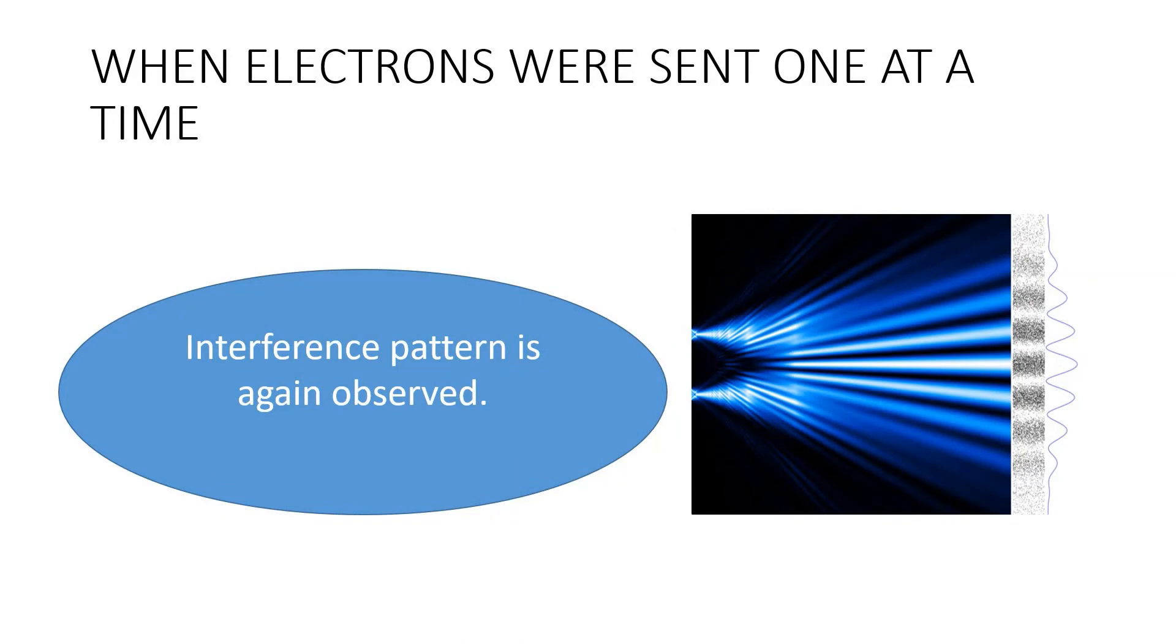The most weird thing happens when we send electrons one at a time through the slits. Again, the interference patterns are observed in the screen. The implication seems to be that each particle passes simultaneously through both slits and interferes with itself.